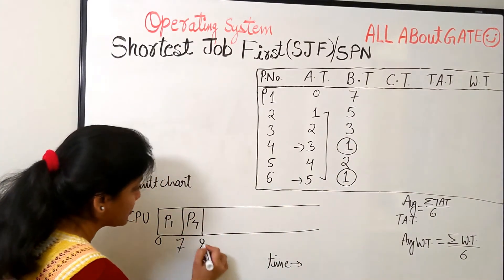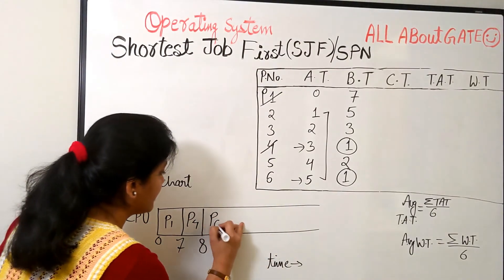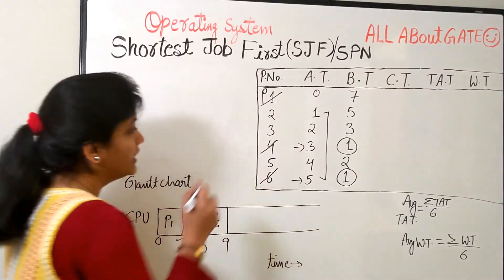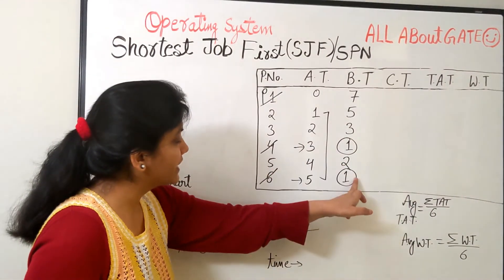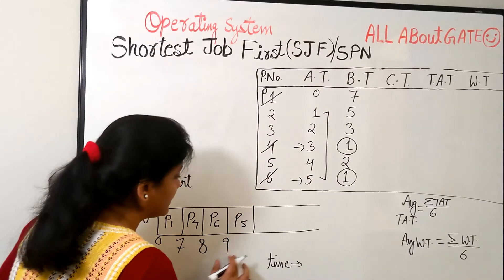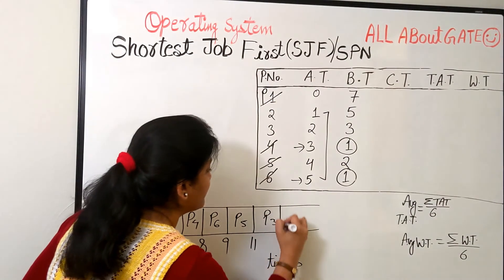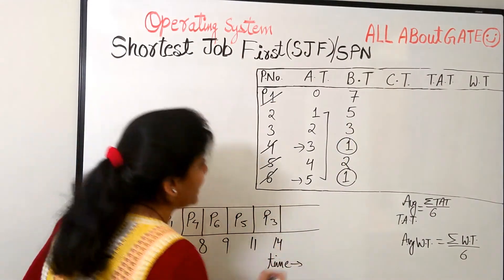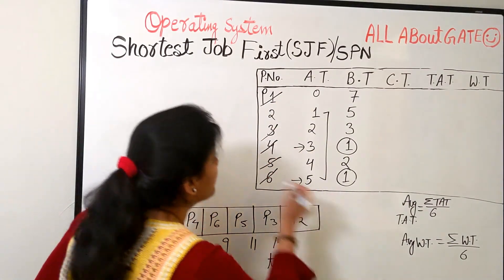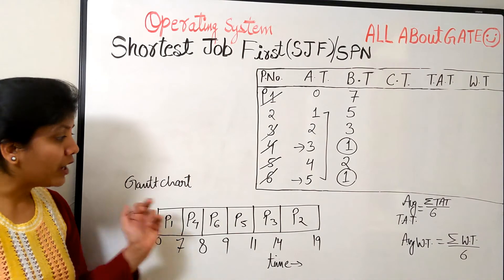For the burst 1. So 7 plus 1, 8. So this is done. Of course, this is also done. Next is of course process number 6. 6 for the burst 1. So 8 plus 1, 9. So this is also done. Now, after 1, 1, which is the next one? The 2. Burst 2 is smaller. So let's take process number 5. For the burst 2, 9 plus 2, 11. Next is 3. So process 3. For the burst 3, 11 plus 3, 14. Done. Next and the last process 2. For the burst 5. So 14 plus 5, 19. That's it. So this is how we do the scheduling.